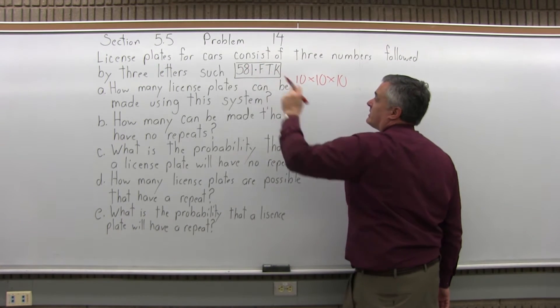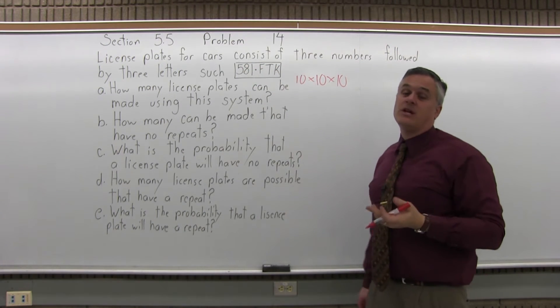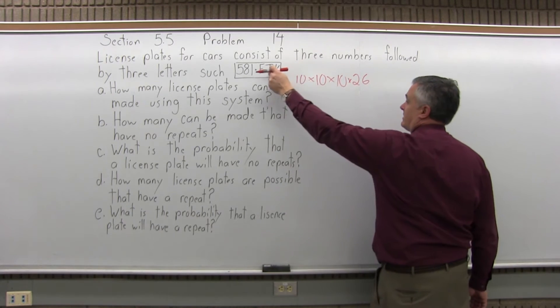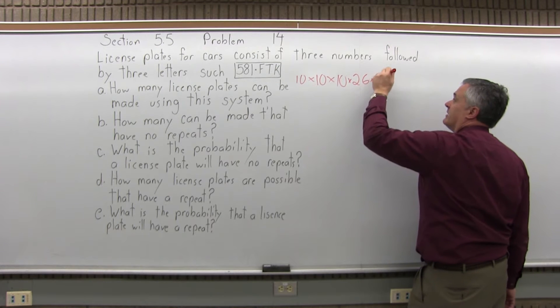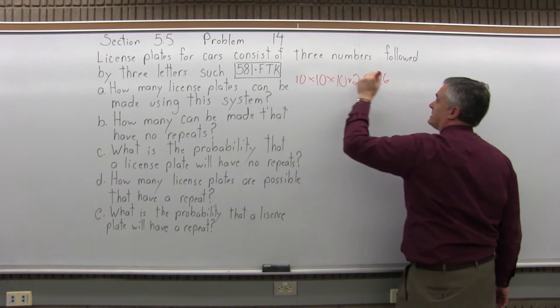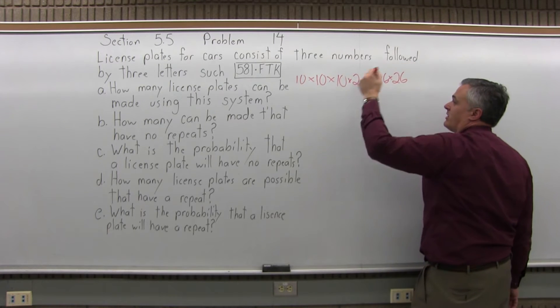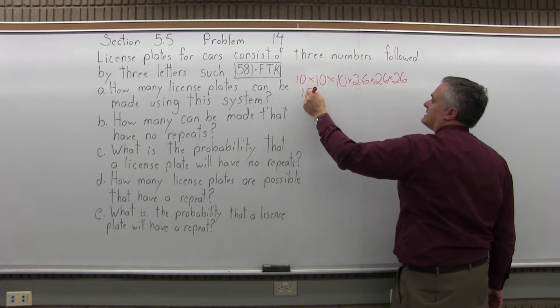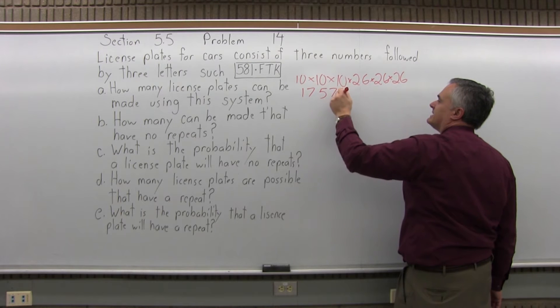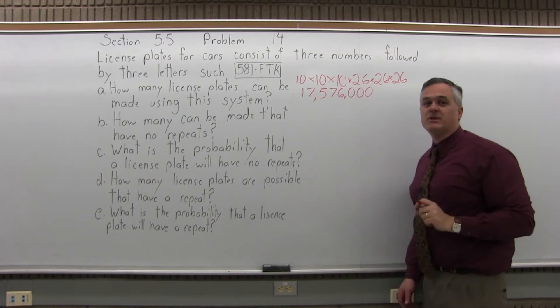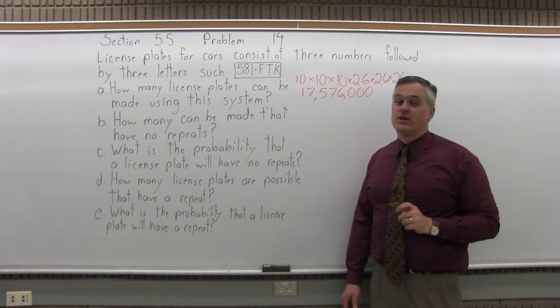Now we're into letters. In the alphabet, there's 26 letters, so 26 choices. The next letter, 26 choices again. And the last letter, 26 choices again. If you multiply all that out, it comes out to 17,576,000 different license plates that can be made using this system. A lot of license plates.